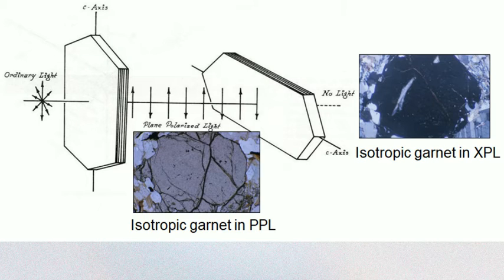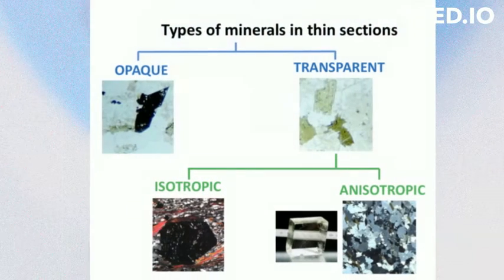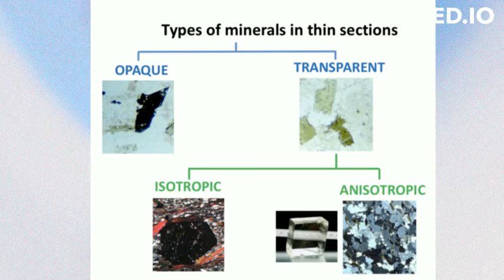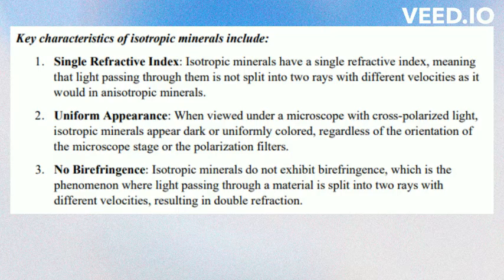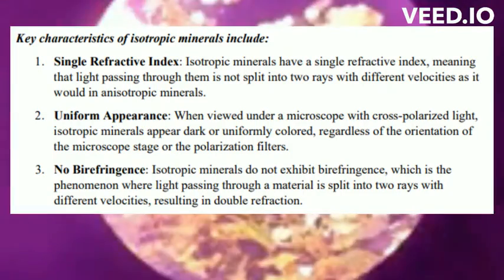Isotropic minerals are those that exhibit uniform physical properties in all directions. In terms of optical properties, isotropic minerals behave the same regardless of the direction in which light passes through them. They have a single refractive index, meaning they do not exhibit birefringence. This is in contrast to anisotropic minerals, which have different physical properties depending on the direction in which they are measured. Isotropic minerals have a single refractive index, meaning that light passing through them is not split into two rays with different velocities as it would in anisotropic minerals.